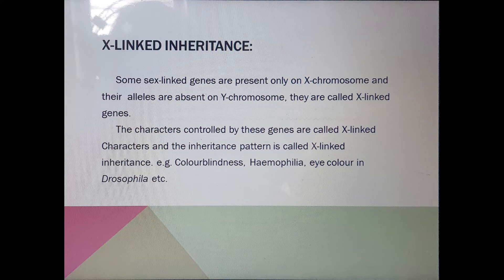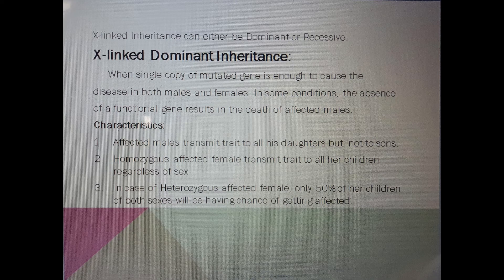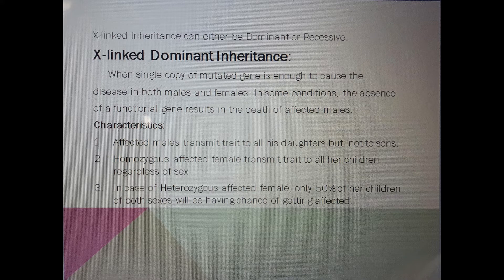There are two types of X linked inheritance: X linked dominant and X linked recessive. For X linked dominant inheritance, when a single copy of a mutated gene is enough to cause disease in both males and females, it is called X linked dominant inheritance. Only one gene is enough for the disease to occur, and being dominant, it suppresses the remaining genes in the chromosome. In some conditions, the absence of a functional gene results in death of affected males.